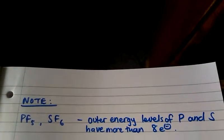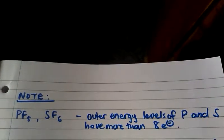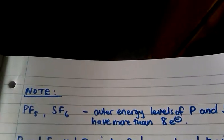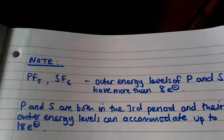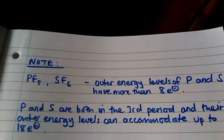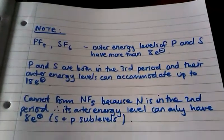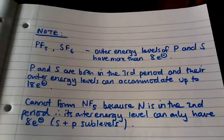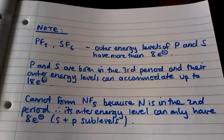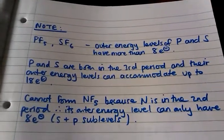You might have noticed that in the last two examples, PF₅ and SF₆, the phosphorus and sulfur have more than eight electrons in the outer energy levels. That's allowed because both phosphorus and sulfur are in the third period in the periodic table, which means the outer energy levels can accommodate up to 18 electrons. Note that we can't form NF₅ because nitrogen is only in the second period, so its outer energy level can only have a maximum of eight electrons, held in S and P sublevels.